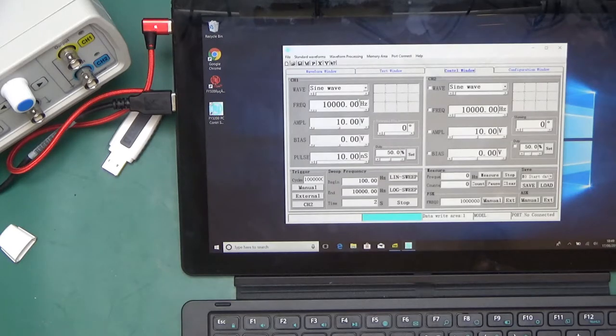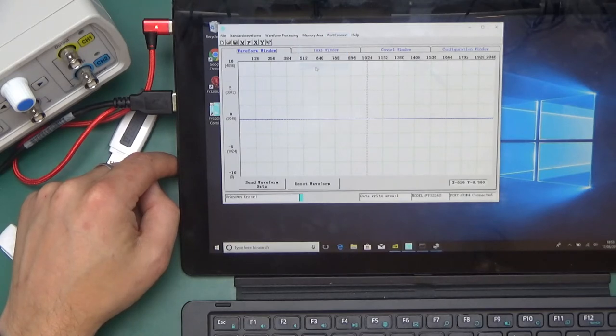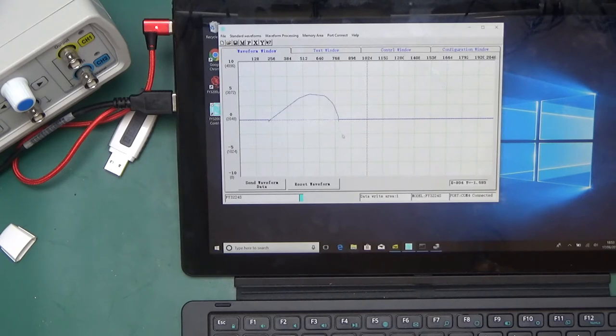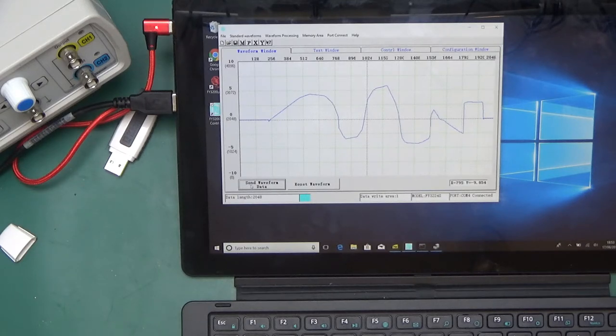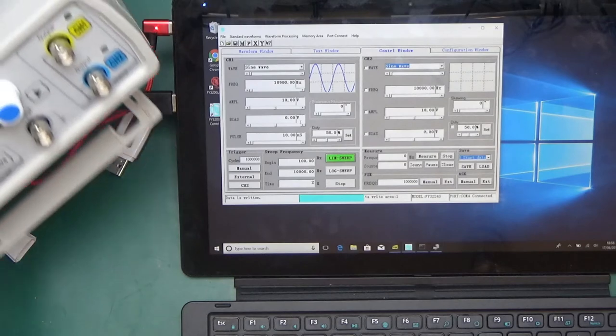It's PC control software for FY3200 and it's all in English. That was in the user manual folder. We can control it from a computer. Port connect COM 4. Connected. So let's try to draw something. That's an interesting wave. Let's send the waveform data. It's going slowly and I guess after some fighting it kind of works.